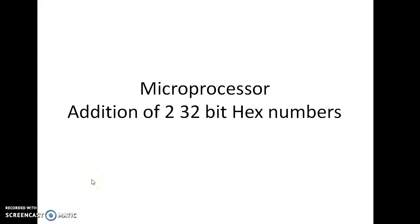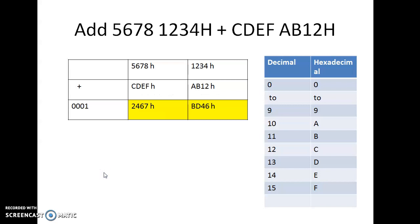Hello students, welcome back. In this section we are going to discuss the addition of two 32-bit hexadecimal numbers using the 8086 microprocessor. You might have learnt the concept in theory classes. Now we will briefly see how to add two hexadecimal numbers, how to write the program, how to execute it, and see the output of 32-bit addition.